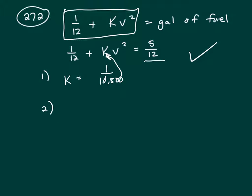Clue two says when the truck travels 30 miles per hour, so 1/12 plus K times 30 squared—that's a velocity—he uses 1/6 gallon gas. Okay great, so I've got an equation and I could solve this equation for K.